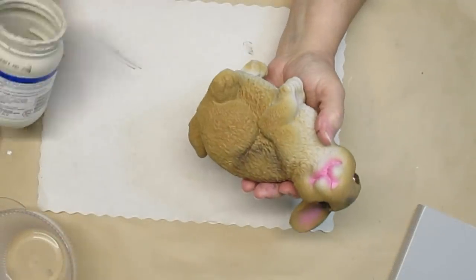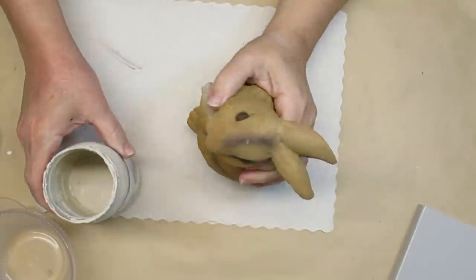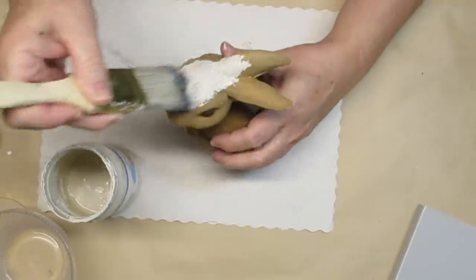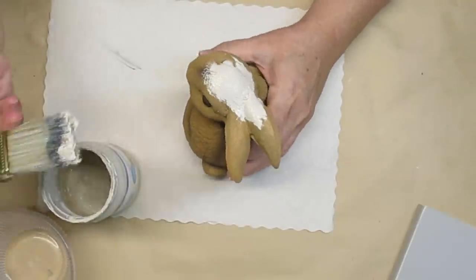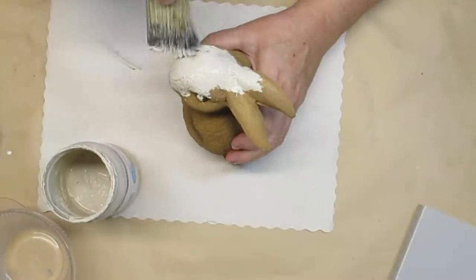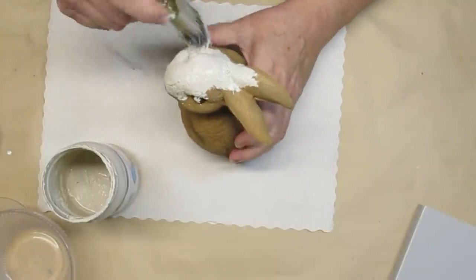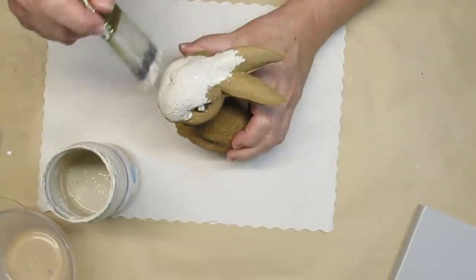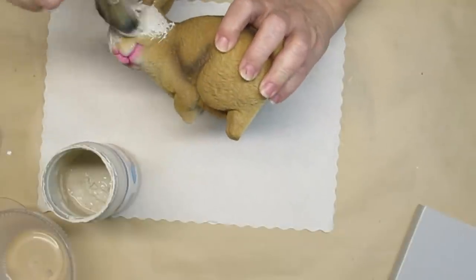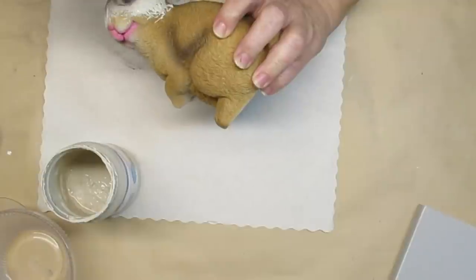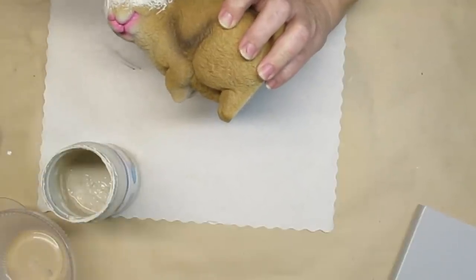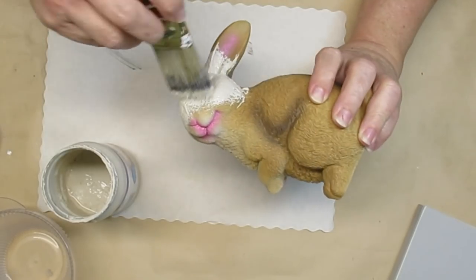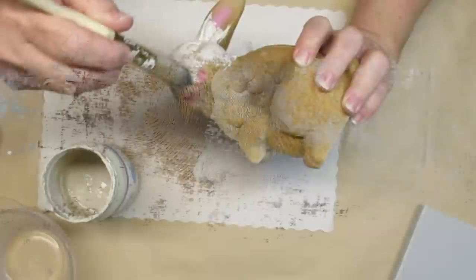For my last project today I'm going to upcycle this kind of cute but not so cute bunny that I got from Dollarama. The eyes are a little weird and the pink is just too pink, so I'm taking my favorite mushroom color which is sort of a cross between beige and gray and a nice rough brush. I'm going to paint this and make sure I get into all of those little nooks and crannies because there's so much texture on this guy. Once he's done I really liked how he turned out.